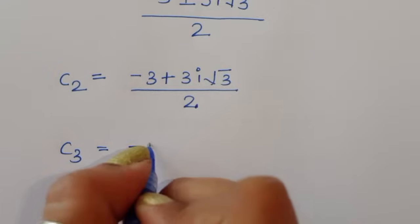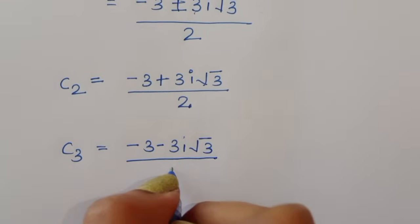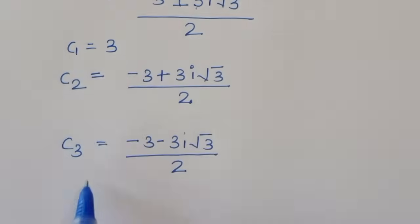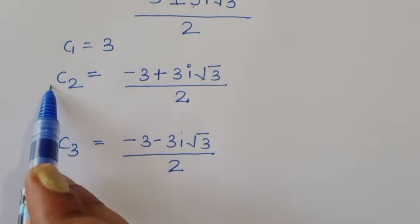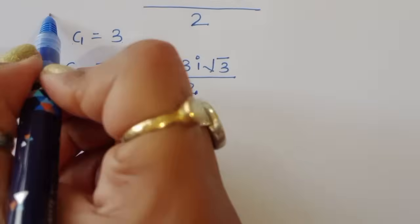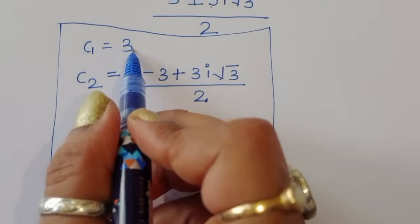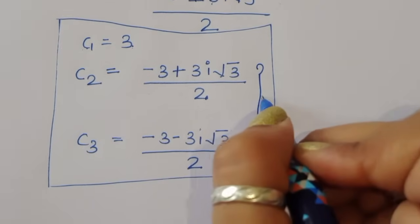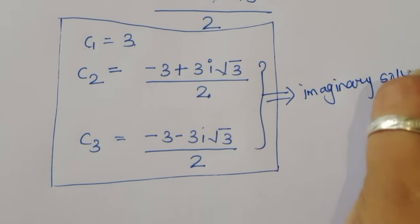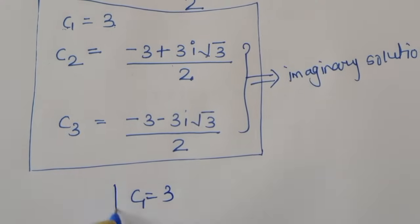We have three values: c₁ equals 3, c₂ equals (minus 3 plus 3i√3) / 2, and c₃ equals (minus 3 minus 3i√3) / 2. Since c₂ and c₃ are imaginary numbers, we reject them. Therefore c₁ equals 3 is the real solution.